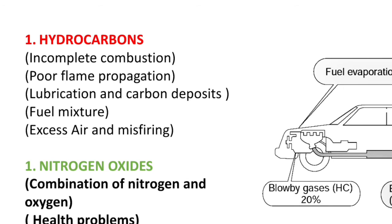Nitrogen oxides are only formed when there is a very high combustion temperature and pressure. NOx formation only takes place above 1200 degrees Celsius. The only way to control NOx formation is to control the combustion process temperature — a slightly rich mixture and low combustion temperature minimizes NOx formation.